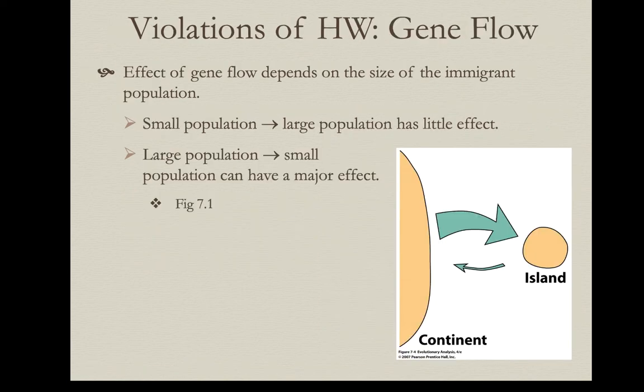How does gene flow impact deviations from Hardy-Weinberg equilibrium? This depends on the direction of gene flow and the relative sizes of the immigrant population. Moving from a small population to a large one is like a drop in the bucket — like adding one drop of red paint to a five-gallon bucket. But taking an individual from a large population and dropping it into a small population could make a real difference in allele frequencies — like adding a drop of bright red paint to a thimble of white paint.